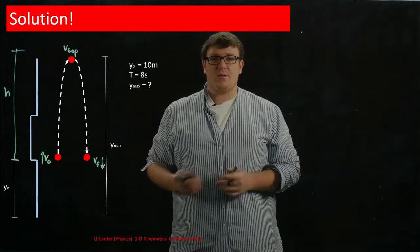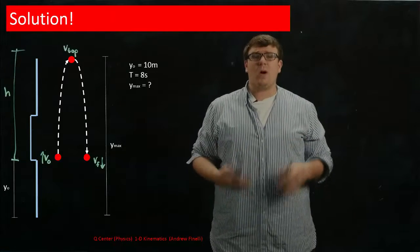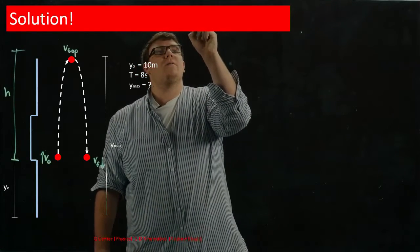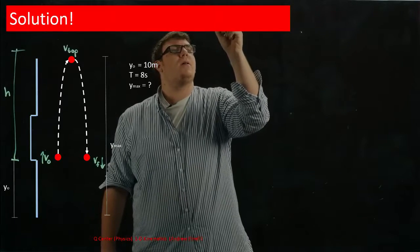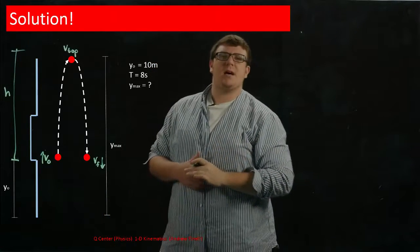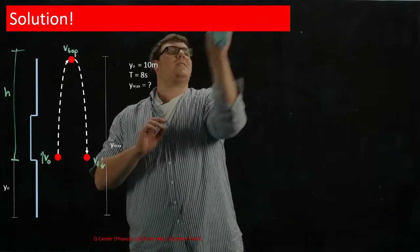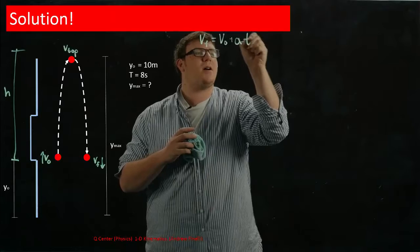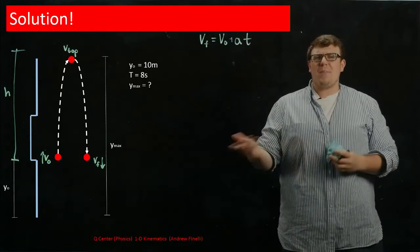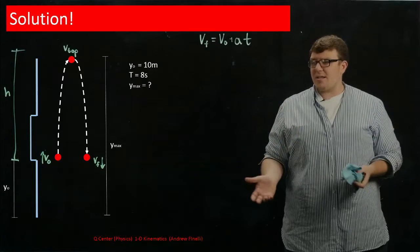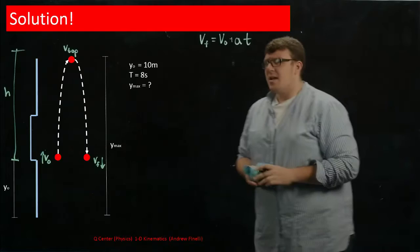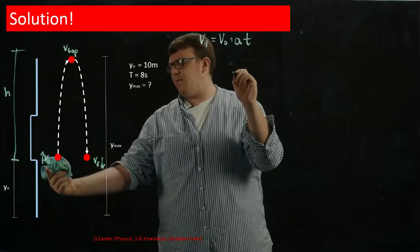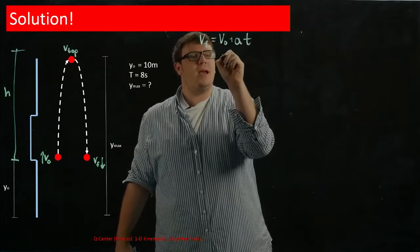So the first thing you have to do is pick one of the kinematics equations to use. In a lot of cases, you're not only going to use one, but you're going to use multiple of them to solve it. So the first one that I'm going to pick is I'm going to pick vf equals v zero plus acceleration times time. So it's vf equals v zero plus acceleration times time. So it may not be obvious why I picked that right now, but when you solve it, you'll see why. A lot of times, picking the right equation just comes with practice.